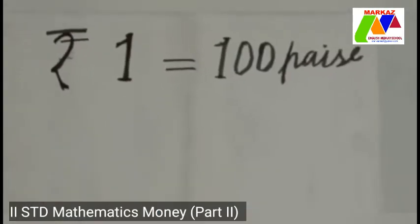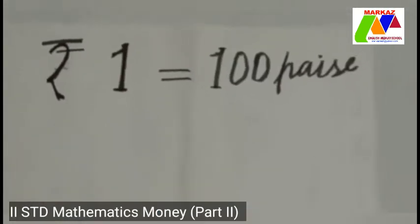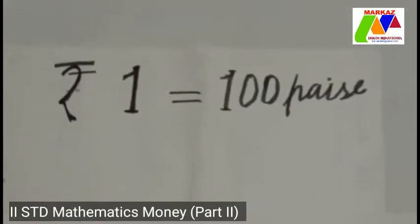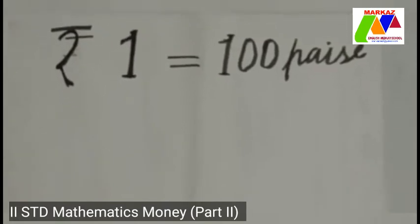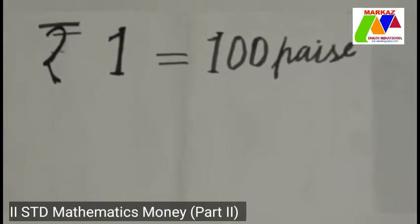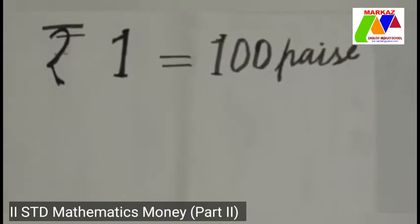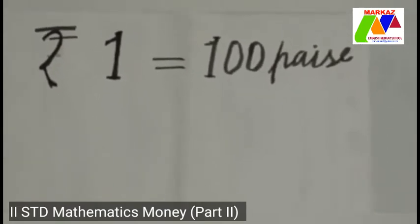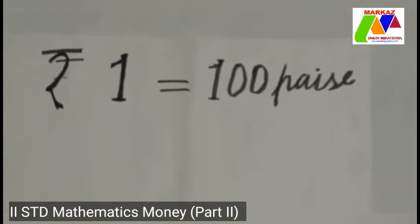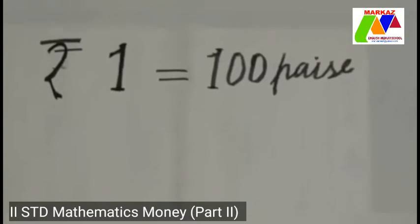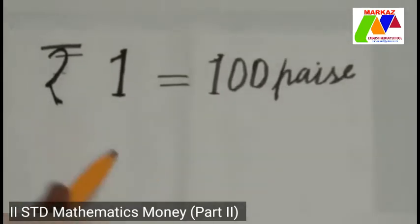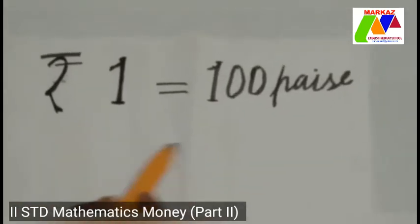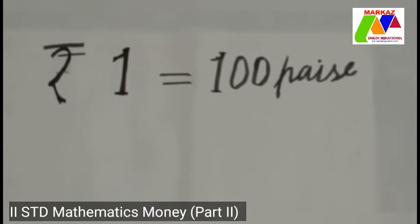Children, do you know how many paise make one rupee? You have learned that one hundred paise make one rupee. That is, one rupee is equal to one hundred paise.